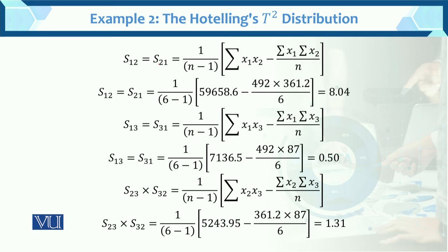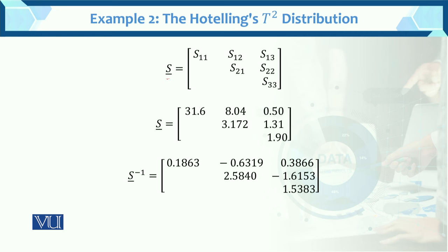S12 which equals S21 — these are the cross-product terms. S12 equals S21: if we say x12 versus x21, there is no difference — x2 and x1 just swap, so the value is the same. These values are also found from the data. Entering those values gives us S12. Then S13 and S23 values are also obtained. This completes the sample variance-covariance matrix S — all values are determined.